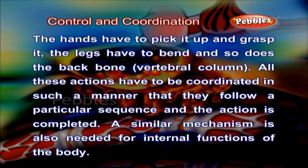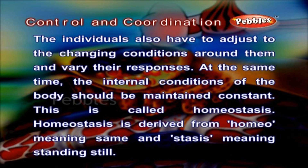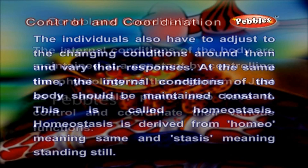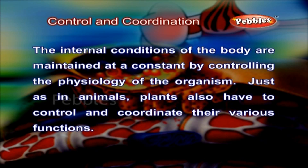A similar mechanism is also needed for internal functions of the body. The individuals also have to adjust to the changing conditions around them and vary their responses. At the same time, the internal conditions of the body should be maintained constant. This is called homeostasis. Homeostasis is derived from homeo meaning same and stasis meaning standstill. The internal conditions of the body are maintained at a constant by controlling the physiology of the organism.